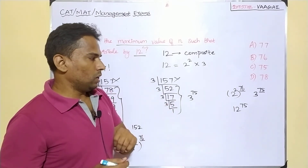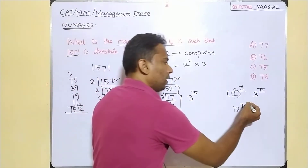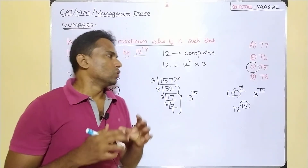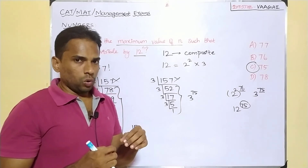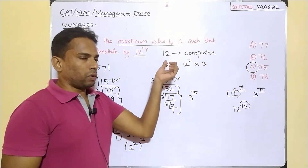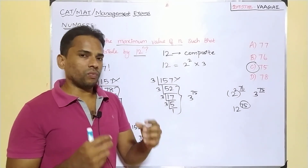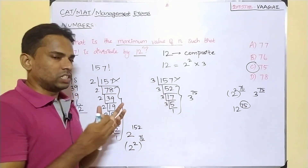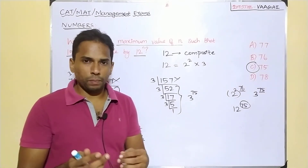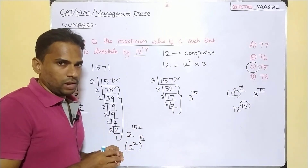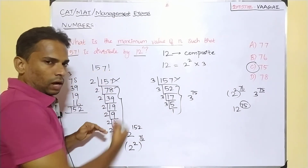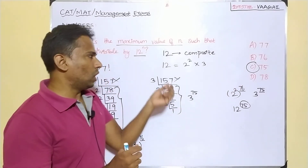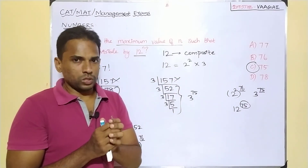The maximum value of n is 75, so the answer is option C — 75. This is the procedure for finding the highest power of a composite number: prime factorize it, find the highest power of each prime factor (adjusting for squared or higher prime factors), and then take the minimum across all factors. For a prime number, you can directly apply the step division method without these extra steps.